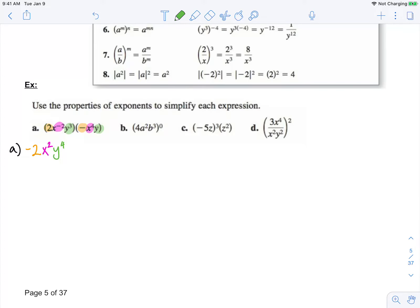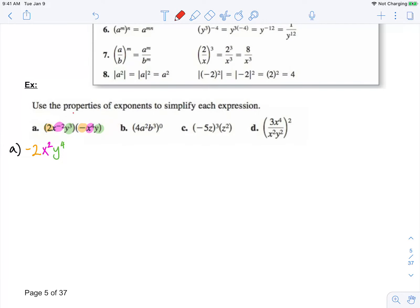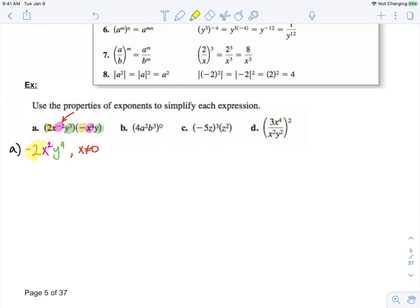Now one thing we must keep in mind is that we can't have zero in our denominator at any time. So we notice x to the negative 2 would have actually been 1 over x squared. So therefore, we add the exclusion x cannot equal zero, because at some point in that problem, we would have had zero in our denominator without that restriction.